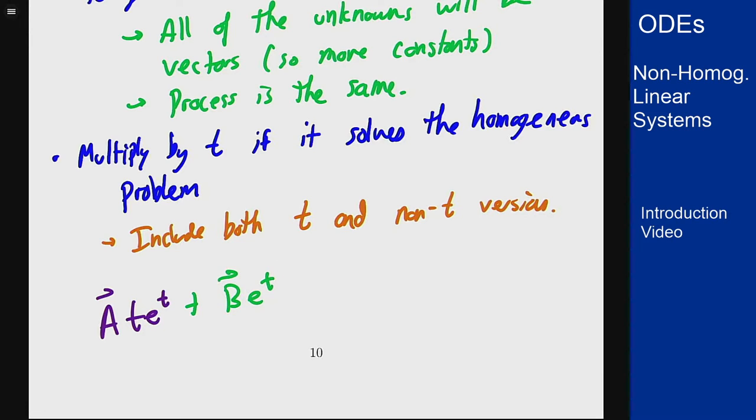You don't know how it's all going to interact so you want to include all of these terms when putting together the guess for these undetermined coefficient solutions for systems.